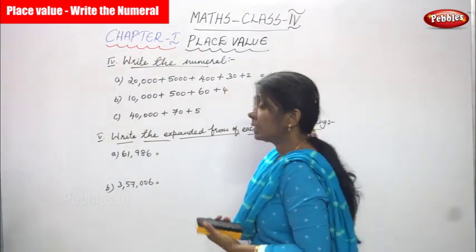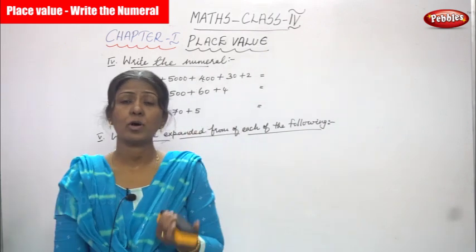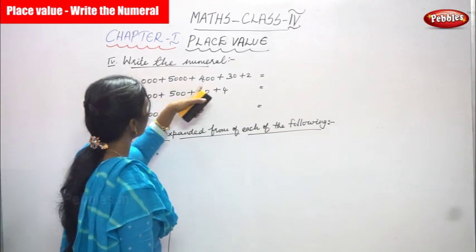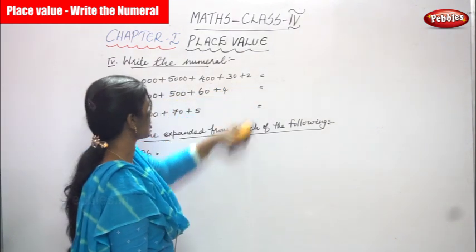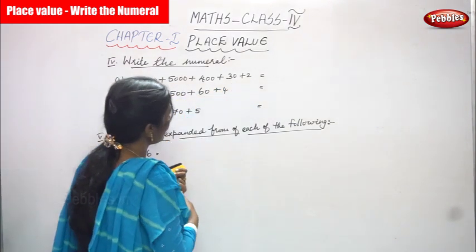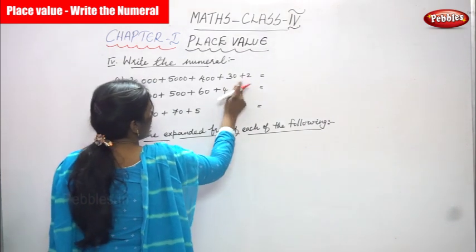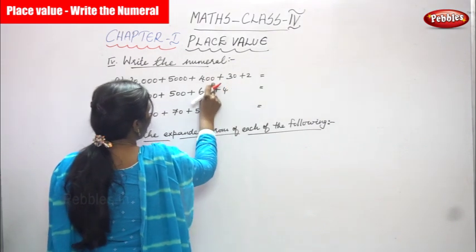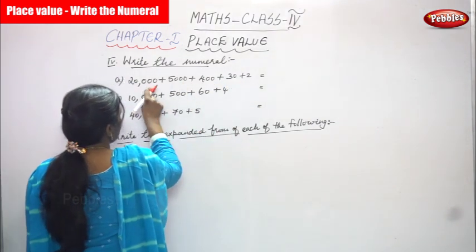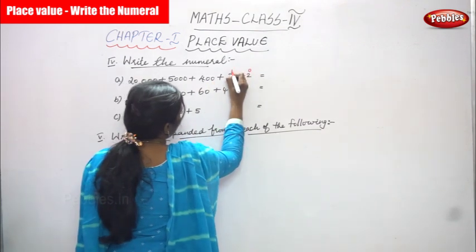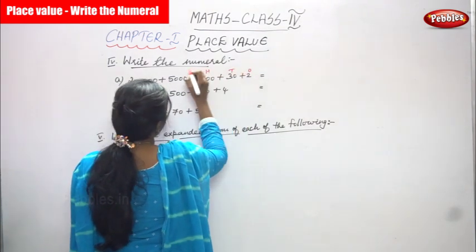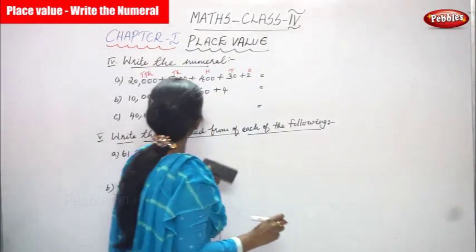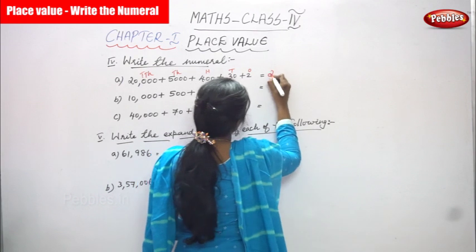Write the numerals - numerals means numbers. So 20,000 plus 5,000 plus 400 plus 30 plus 2. I always start with ones: ones, tens - one, two ones, 30 that means three tens, and four hundreds, and five thousands, and twenty thousands. So this is ones, this is tens, this is hundreds, this is thousands, and this is ten thousands.